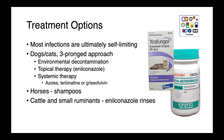Most cases of dermatophytosis are ultimately self-limiting. In dogs and cats, we treat using a three-pronged approach: environmental decontamination — bleaching hard surfaces, removing soft surfaces, and vacuuming with a disposable vacuum — topical therapy with enilconazole, and systemic therapy with azoles, terbinafine, or griseofulvin. In horses, shampoos can be used, and in cattle and small ruminants there are enilconazole rinses. In severe cases, consultation with a veterinary dermatologist is recommended.